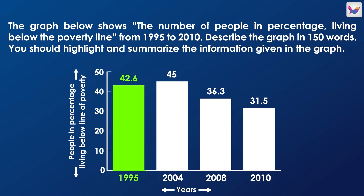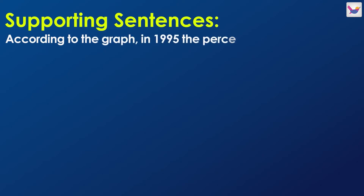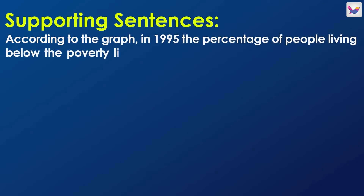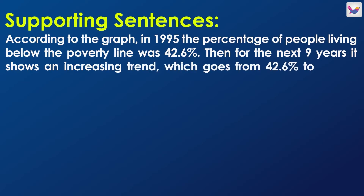In 1995, the poverty rate was 42.6%. But in 2004, the rate was 45%. According to the graph, in 1995, the percentage of people living below the poverty line was 42.6%. Then, for the next nine years, it shows an increasing trend, going from 42.6% to 45% in 2004, which is the highest percentage in the graph.